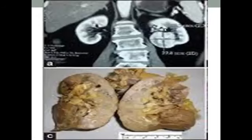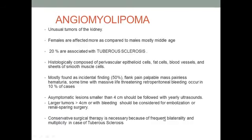Here you can see the tumor and the cut section. Angiomyolipoma is composed of three parts: angio (blood vessels), myo (smooth muscle cells), and lipoma (fat cells). Fat cells are very important in this tumor, which makes its appearance dark on plain X-ray. It is more common in females and associated with tuberous sclerosis.